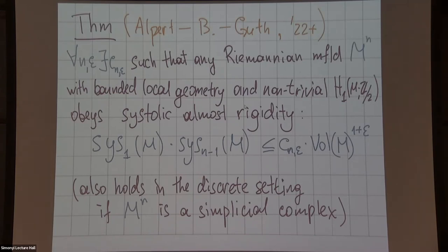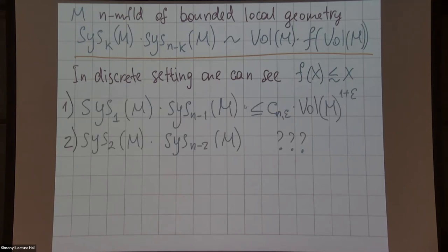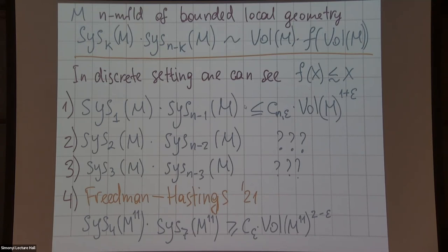To finish, let me say what happens for other systolic products. We don't know what happens for the product of the second and n minus two systole. But we do know that this phenomenon of being almost systemically rigid is no longer true in dimension four and higher because there are some very fun examples by Friedman and Hastings of manifolds which come through quantum error correcting codes. They started from quantum error correcting codes and they built manifolds. That's cool. I'll stop here.